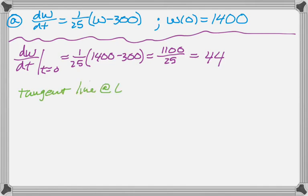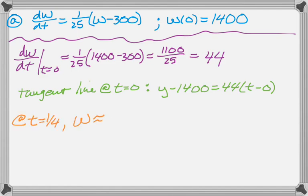So write the equation of the tangent line at t equals 0. So that's going to be y minus 1400 equals the slope we just found, and then t minus 0. And then we're supposed to use it to approximate the value of w at t equals 1/4. So w when t is 1/4 is approximately 1400 plus 44 times the 1/4, which is 1411. So that's our approximation, so nothing too exciting.